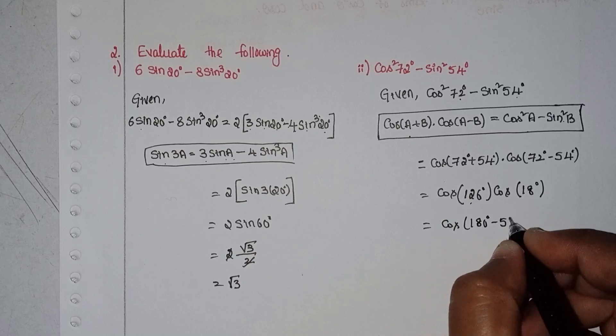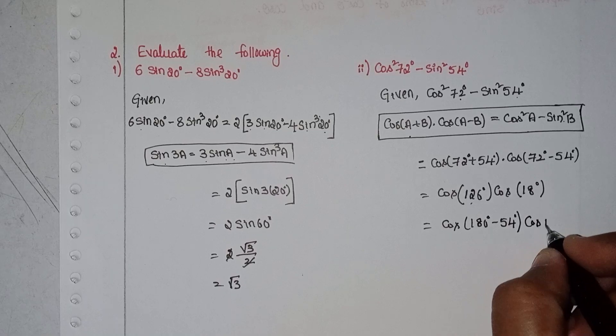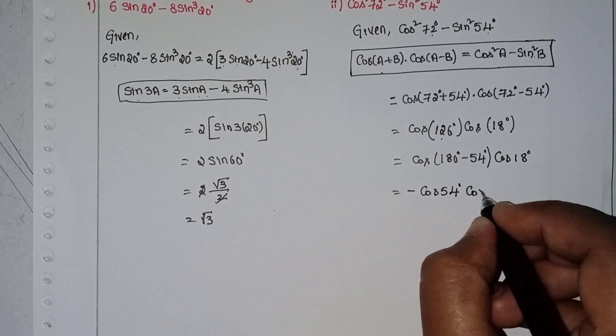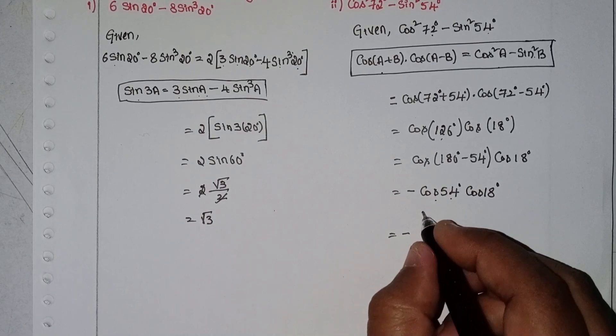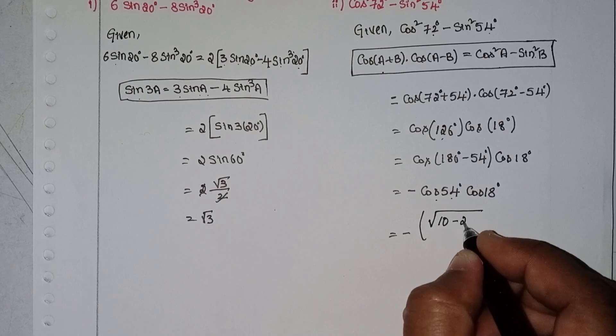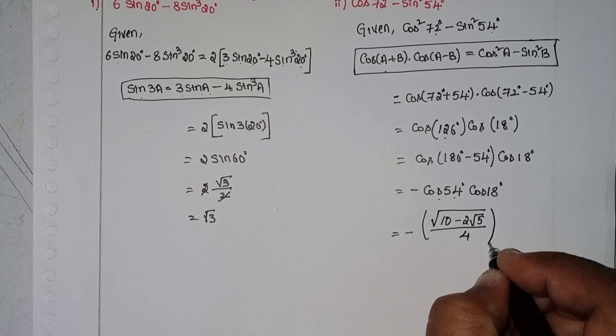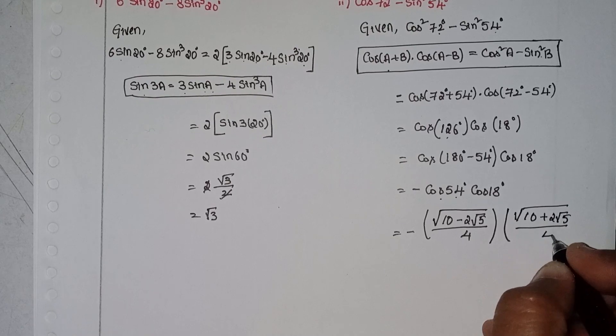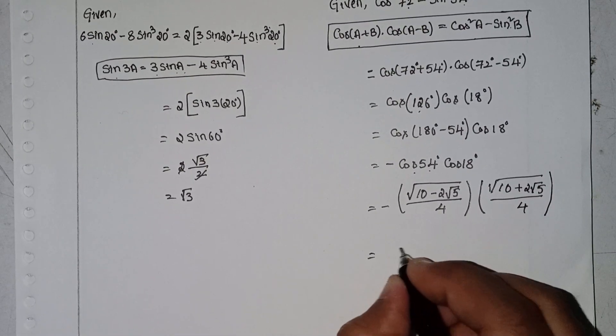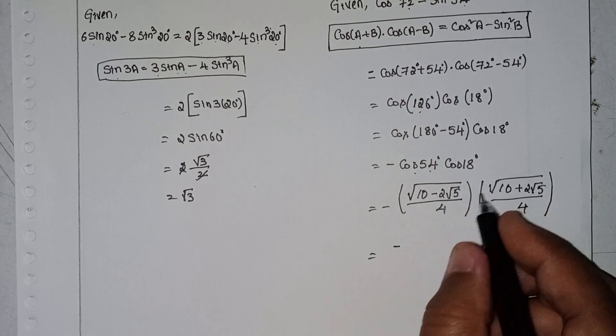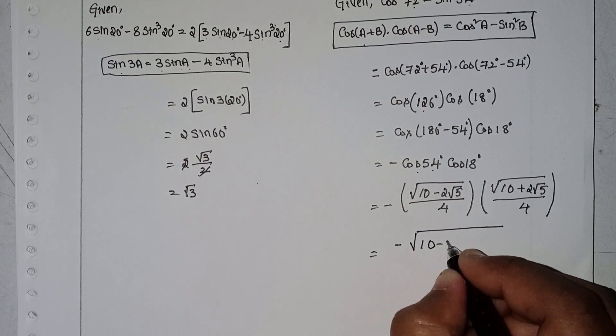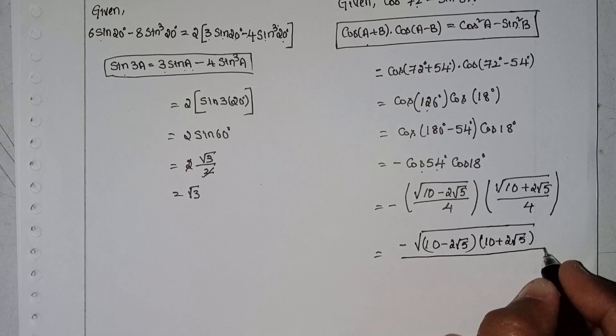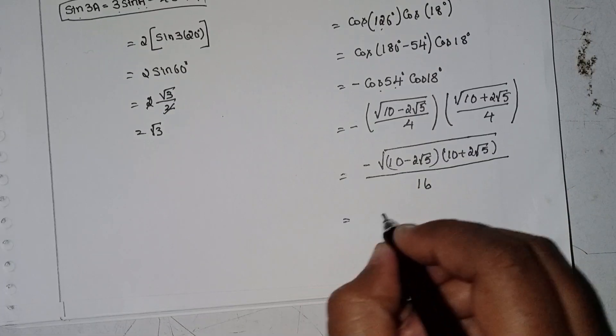So cos(72° + 54°) cos(72° - 54°) = cos 126° cos 18°. We can write cos 126° as cos(180° - 54°) = -cos 54°. The value of cos 54° is root over (10 - 2 root 5) by 4. And cos 18° is root over (10 + 2 root 5) by 4.